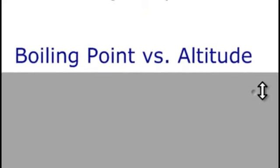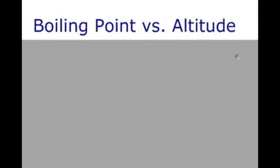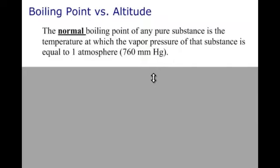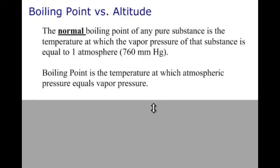Now let's talk about boiling point and its relationship to altitude. We need a new definition of boiling point. The normal boiling point of any pure substance is the temperature at which the vapor pressure of that substance equals one atmosphere of pressure. So water's normal boiling point is 100 degrees Celsius because that's when the vapor pressure — the pressure exerted by the water particles as they evaporate — equals one atmosphere. Our best definition of boiling point then is the temperature at which atmospheric pressure equals vapor pressure.